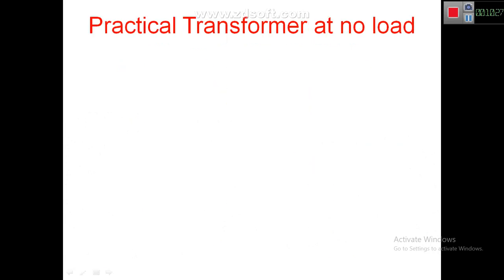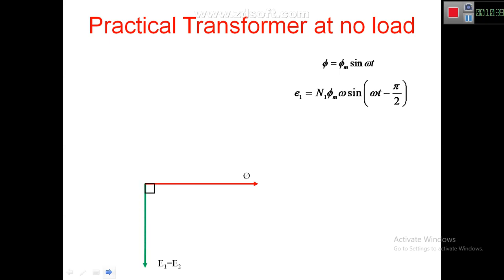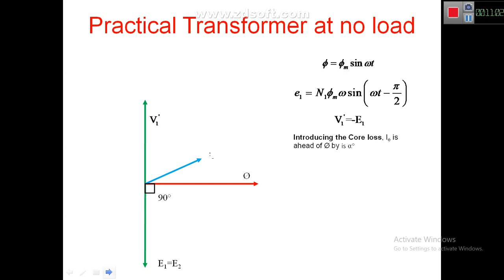This fact is incorporated in our practical transformer at no load. Flux phi is drawn as reference; EMF is 90 degrees behind the flux phi; V1' equals minus E1. Now introducing core loss, Ie is drawn alpha degrees ahead of flux phi. Ie is divided into two components: Ic — the core loss component — and Im — the magnetizing component — shown as phasor addition: Ie = Ic + Im.